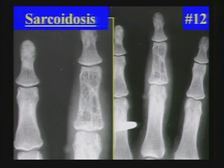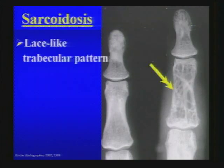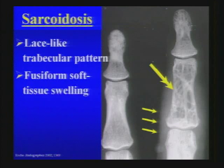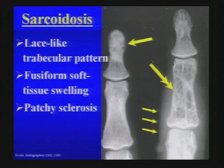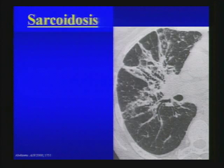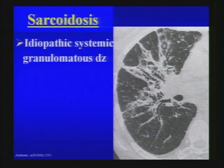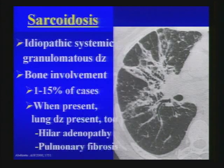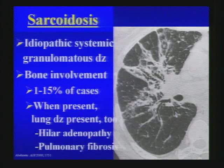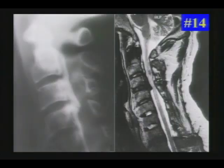Next case — sarcoidosis, a somewhat tough case but with a rather distinctive appearance: a lace-like trabecular pattern without expansion of the bone as you'd see with Paget's. Fusiform soft tissue swelling and patchy areas of sclerosis may also be seen. Sarcoidosis is an idiopathic systemic granulomatous disease; bone involvement occurs in only a minority of cases — up to 15%. When bone is involved, lung disease in the form of hilar adenopathy or pulmonary fibrosis is also typically present.